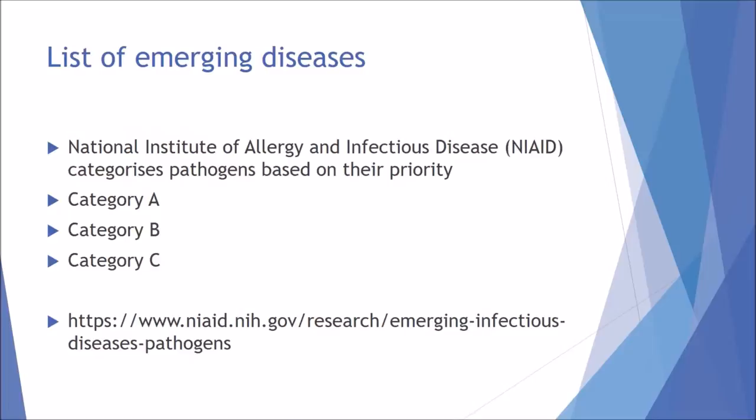Now we'll discuss a list of emerging diseases. The National Institute of Allergy and Infectious Disease, NIAID, categorises pathogens based on their priorities using a ranking system with category A, category B, and category C. All the information discussed in the next few slides can be found on their website, which is linked, so if anything isn't clear enough you can refer there for full details.